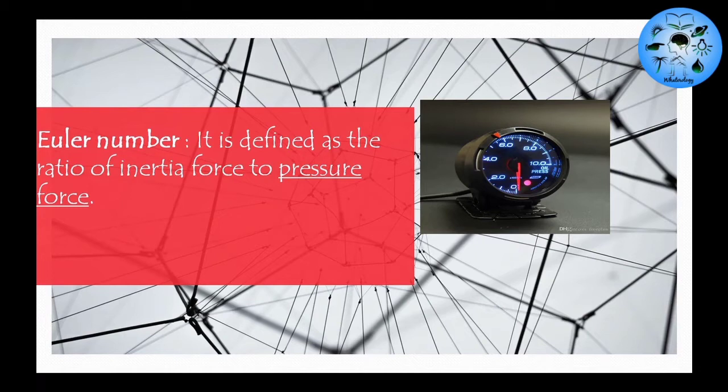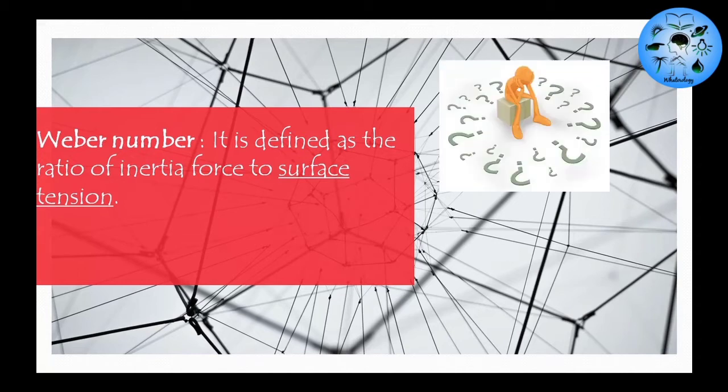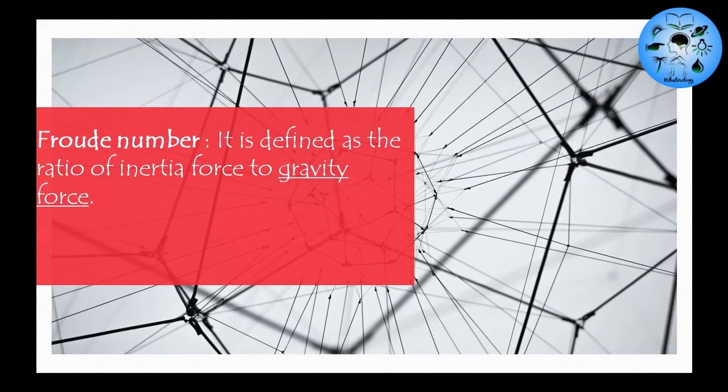Moving on to the next number, the Weber number. It is defined as a ratio of inertia force to surface tension. There's a small story I made: when Weber was a small child, he was very confused because he didn't know whether his name starts from W or V, therefore he was always in tension. Thus comes the term surface tension.